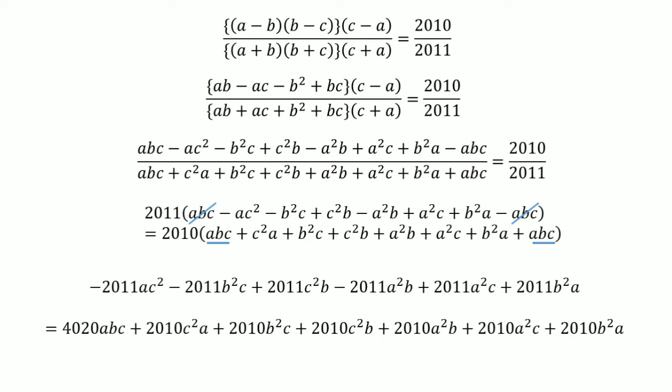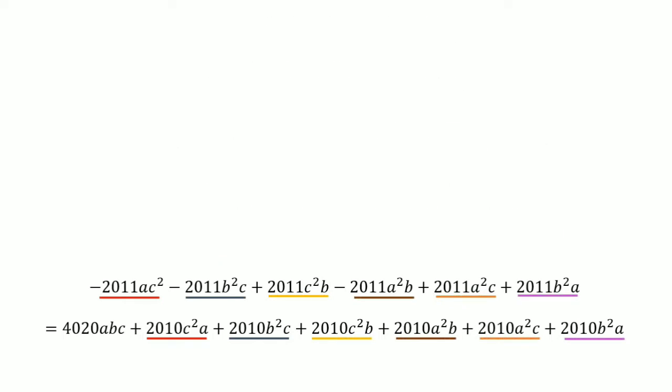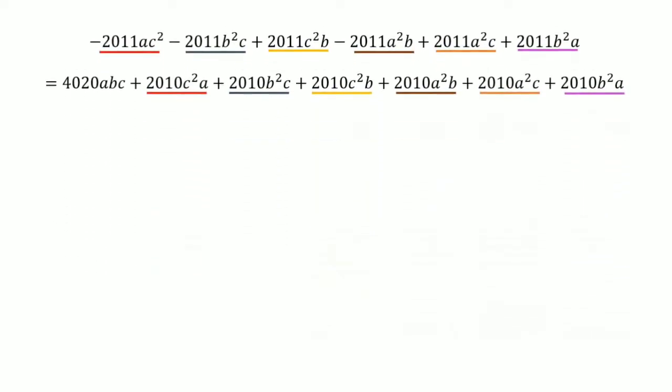After this we get a new expression, and I make extra spaces between terms to show something. Now we make common pair terms — for example, minus 2011 AC squared on the RHS with 2010 C squared A. You can see these groupings highlighted by colored lines, and after simplifying further you get a cleaner expression.